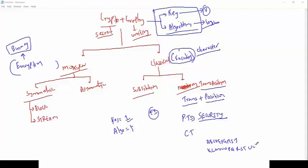So with transposition cryptography — changing the position — we have S, then E is the first one, C is the second, then C, U, R, I, T, Y, S — so: E, C, U, R, I, T, Y, S. This is basically called a transposition cipher where we are transparently changing the position.